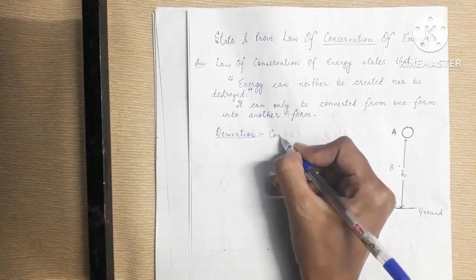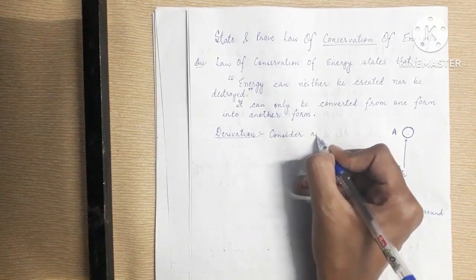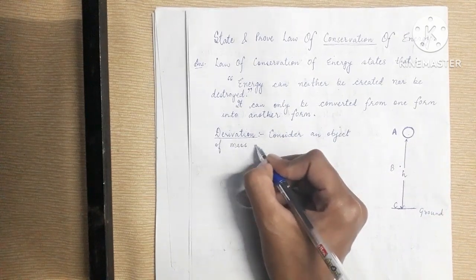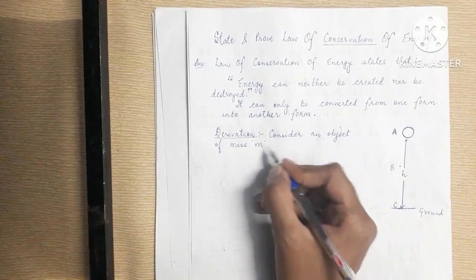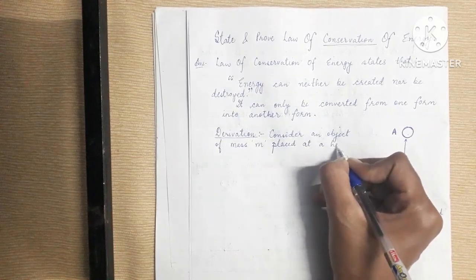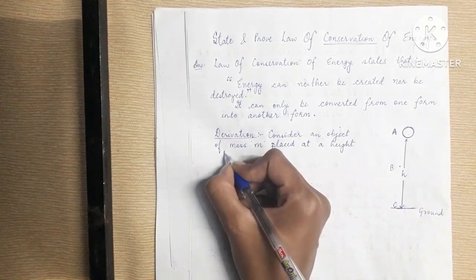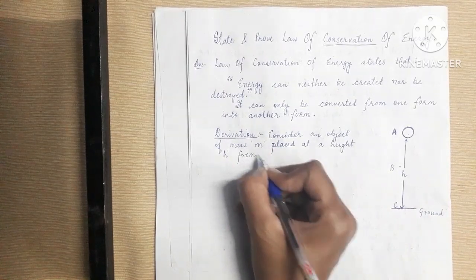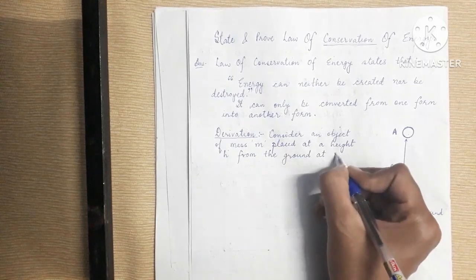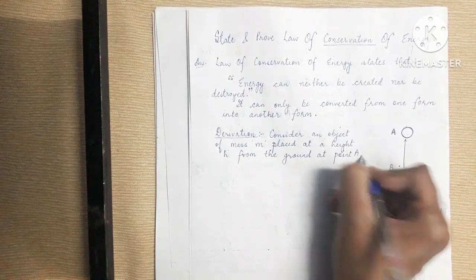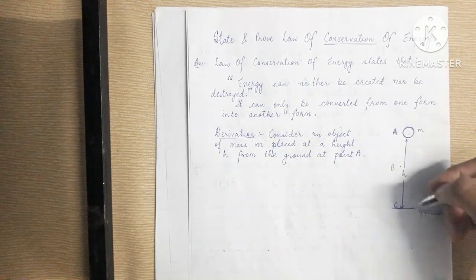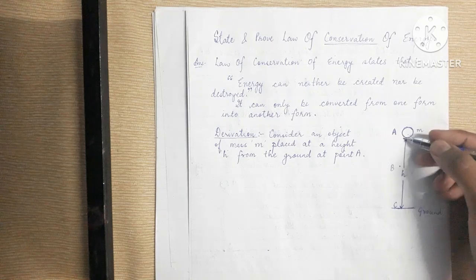Consider an object of mass M placed at a height H from the ground at point A. This is our description of the object — mass M, at height H, at point A.